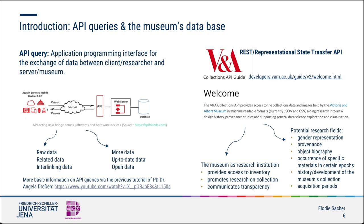The V&A museum, which will serve as the main example in this tutorial, uses a REST API service. This means that data can be retrieved and modified using the HTTP methods GET, PUT, POST and DELETE. GET is used to request data — it is the main method you will use as an independent researcher to receive data. Besides the unified and predefined set of operations, the REST API is based on URLs, an aspect that will be explained shortly.